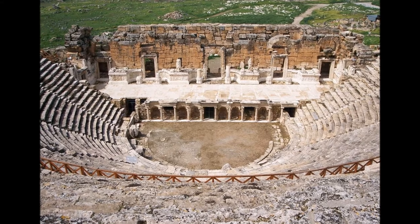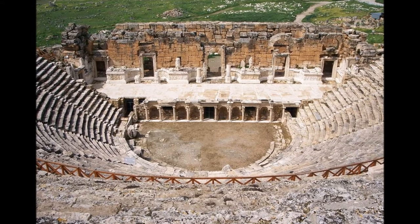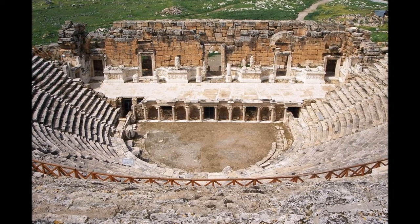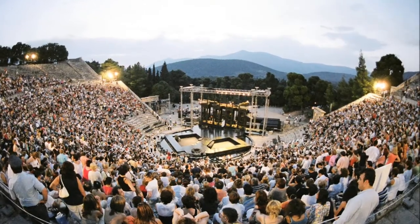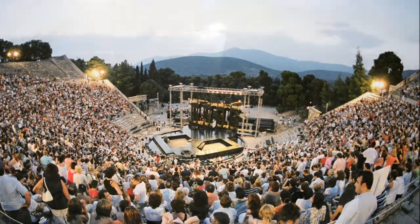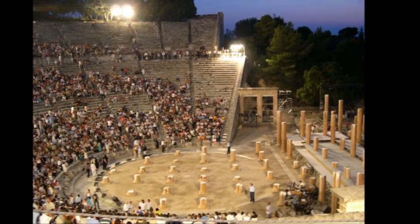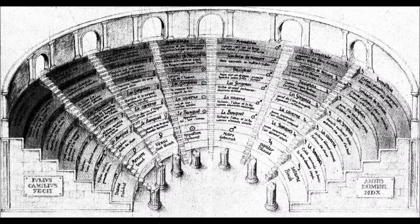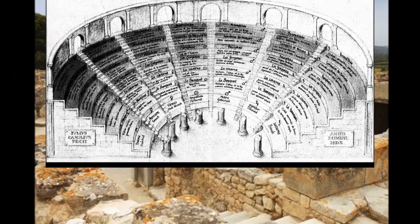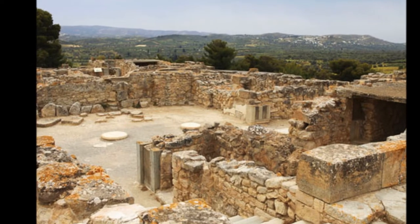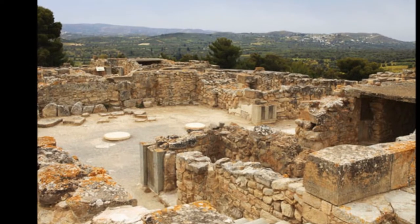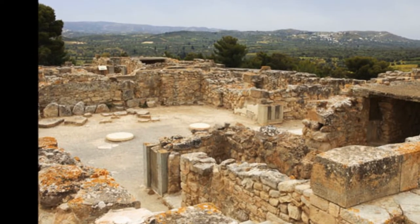Ancient theaters are semi-circular or oblong roofless buildings that are centered on a main stage. The overall point of a theater was to have a large audience focusing their attention upon the main stage. Their exact use varied from culture to culture, as did their design and building material of choice. However, the first was a Minoan theater at the Palace of Phaestos in 2000 BC.